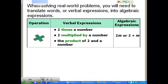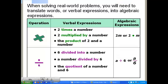Under times, we've got times, multiplied by, and product. And then under divided by, a division, you've got divided into, divided by, and the quotient of.